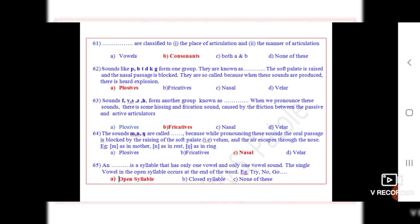Question 65: A dot dot is a syllable that has only one vowel and only one vowel sound. The single vowel in the open syllable occurs at the end of the word. For example, try, no, go. The correct option is A, open syllable.